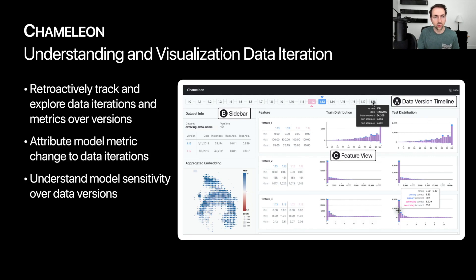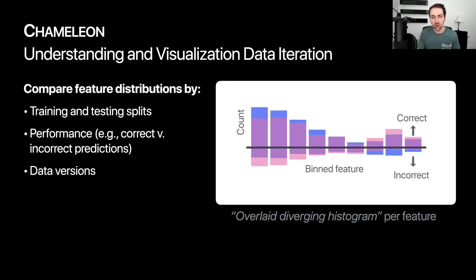All those challenges led us to build the tool we call Chameleon. Chameleon has a number of interesting features: it retroactively tracks and explores data iterations and model metrics over different data versions, attributes model metric changes to different data iterations, and helps understand model sensitivity over different data iterations — finding data points that change predictions to reveal how sensitive different regions of a dataset are. Every single feature in Chameleon gets what we call an overlay diverging histogram. For every feature, you can compare feature distributions by training and testing splits, by performance — correct or incorrect predictions shown above or below the axis — and by data versions, shown using color, where overlap indicates shared data across two iterations.